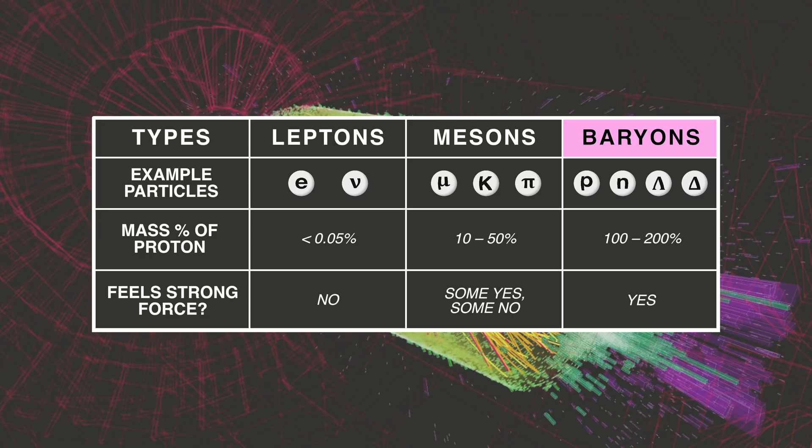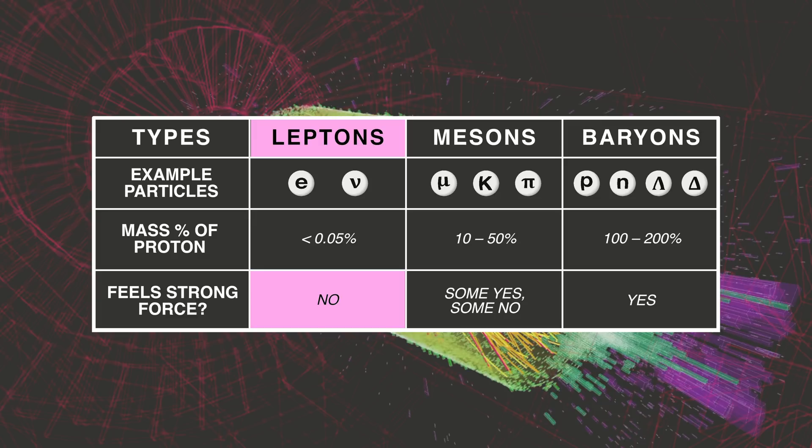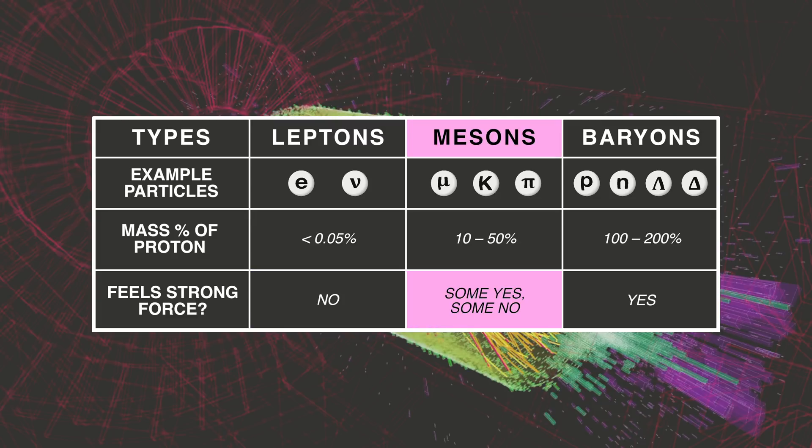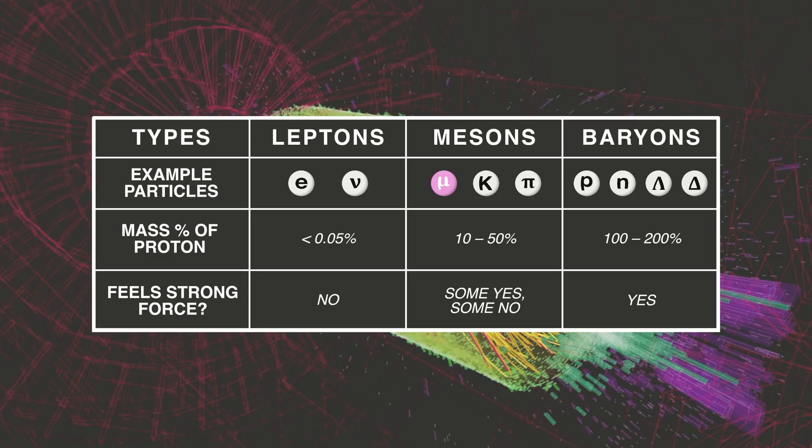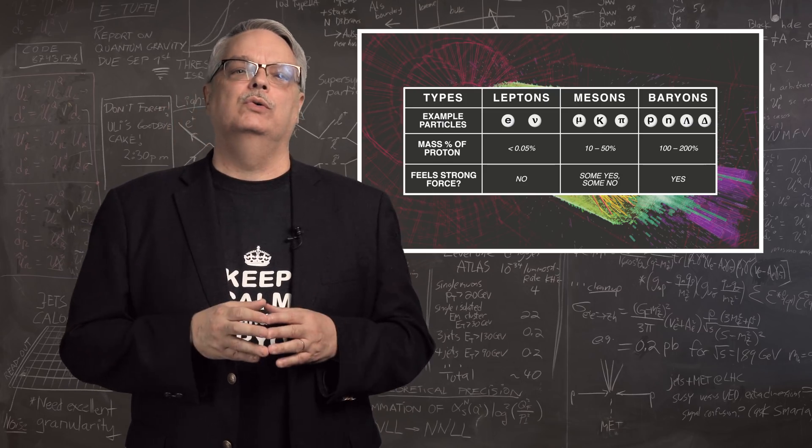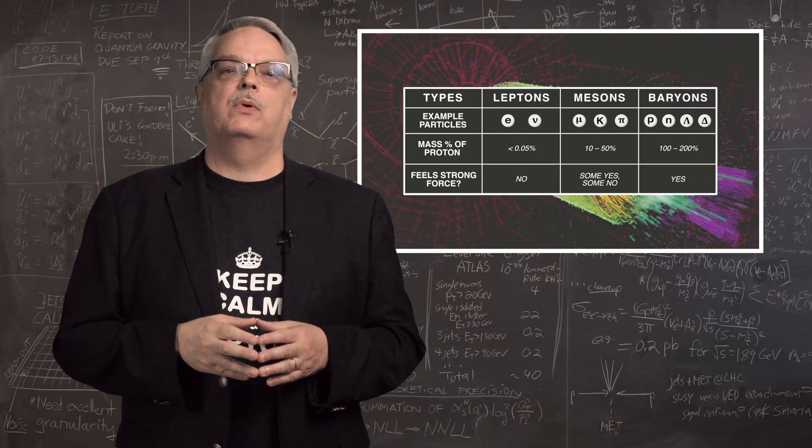Now, this mass-based classification makes sense, but it turns out to be a false lead. Baryons feel the strong force, while leptons do not. Most of the mesons also feel the strong force, but there was an outlier called the muon. It was a low mass meson, but it didn't feel the strong force. That ended up being a powerful clue in the proper way to classify particles.